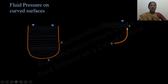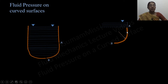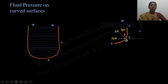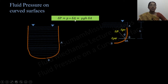Now let us discuss the calculation of the resultant hydrostatic force. Consider a curved container filled with liquid; AB is the marked curved portion. The pressure force acts normal to the surface, making angle θ with the horizontal. The magnitude and direction of this pressure force vary from point to point as we move from A to B. The pressure force ΔP on an element of area ΔA at depth h is ΔP = ρgh · ΔA. This ΔP makes angle θ with the horizontal, and can be resolved into horizontal component dP_H and vertical component dP_V.